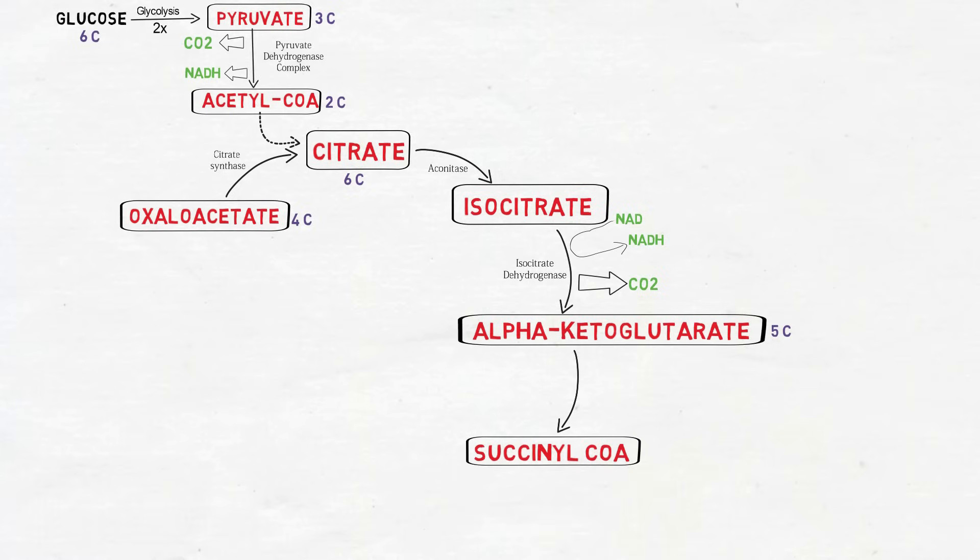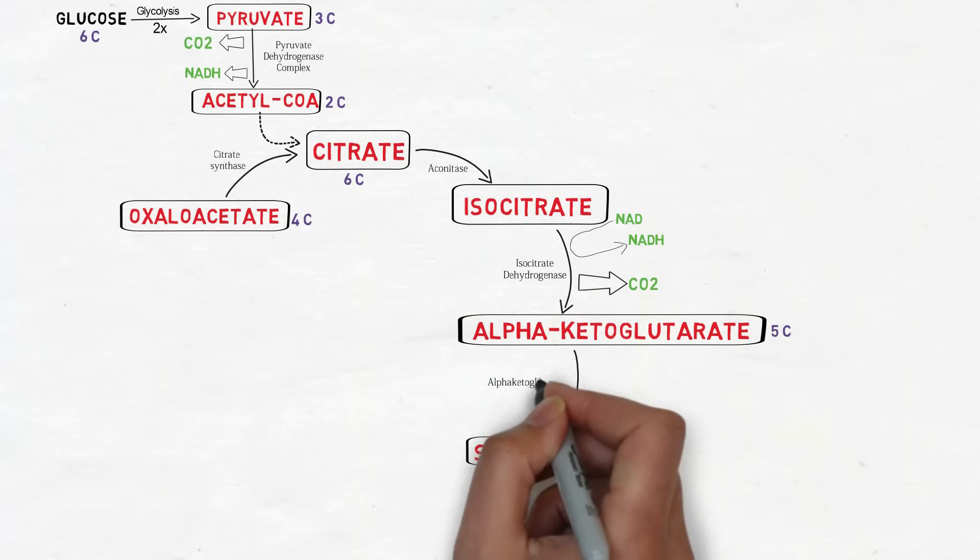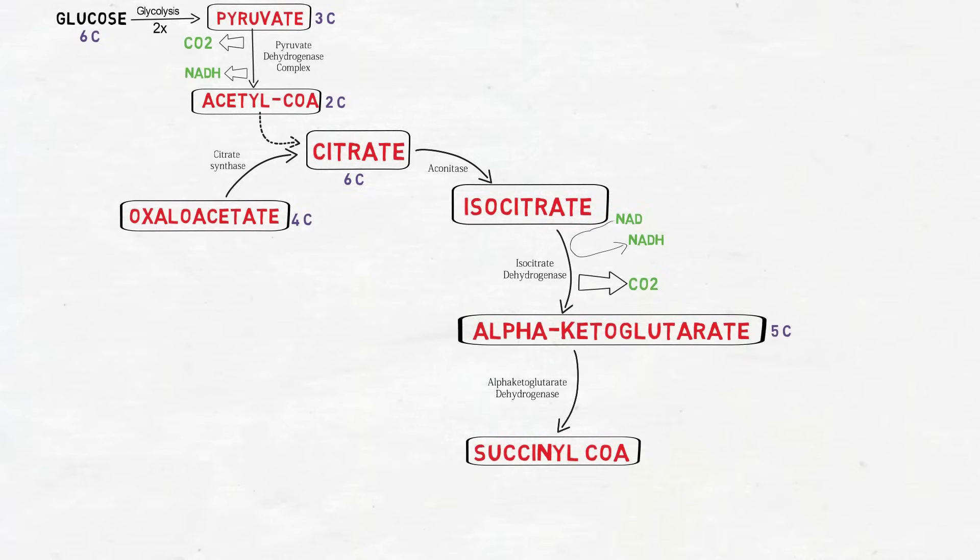The alpha-ketoglutarate is converted into succinyl-CoA by the enzyme alpha-ketoglutarate dehydrogenase. In this reaction also a molecule of NAD+ is reduced to NADH and a molecule of carbon dioxide is released. Hence the succinyl-CoA is a 4-carbon compound.